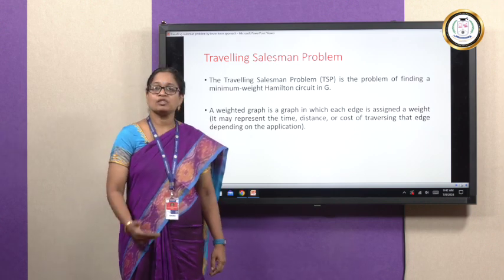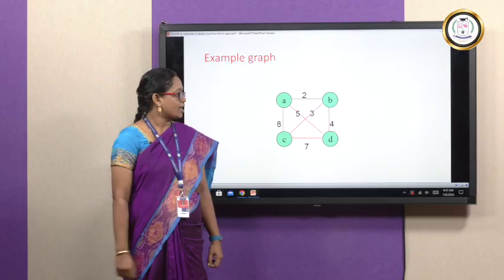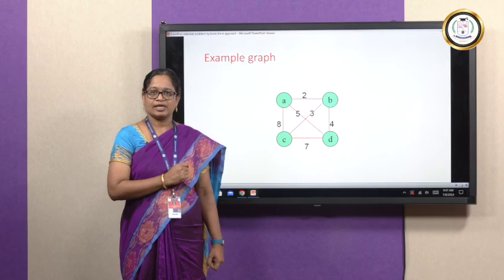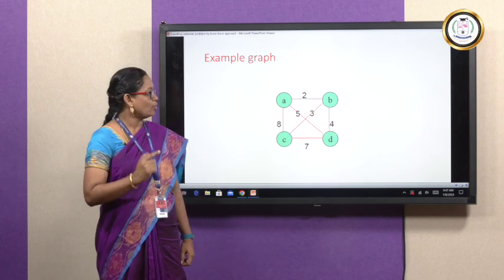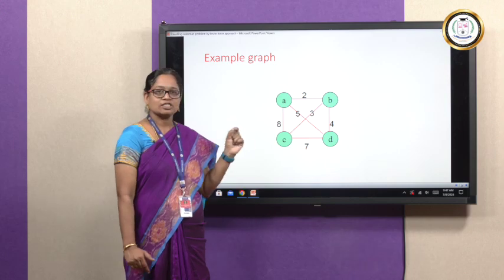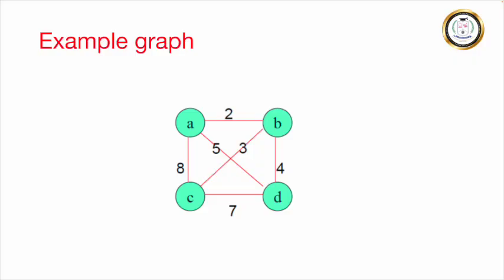Let us look at this example graph. This is a complete graph with four vertices and there are edges between each and every vertex. We can also notice that there is a weight associated with each edge — between A and B the weight is 2, and between B and D the weight is 4, and so on.